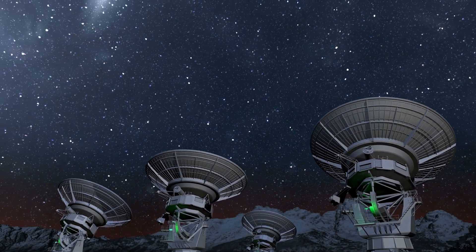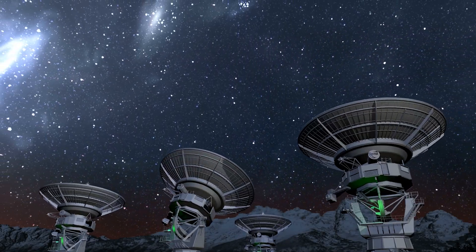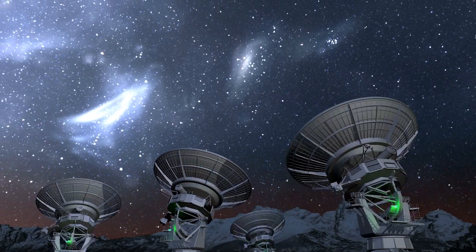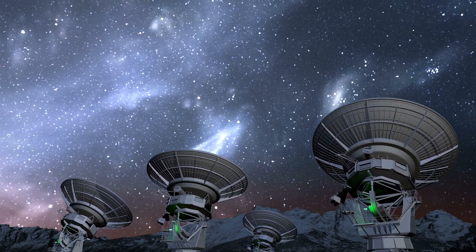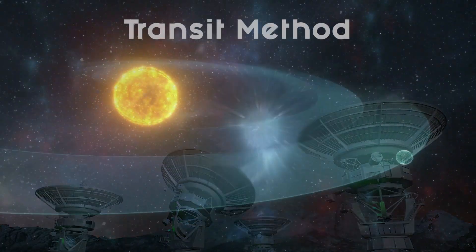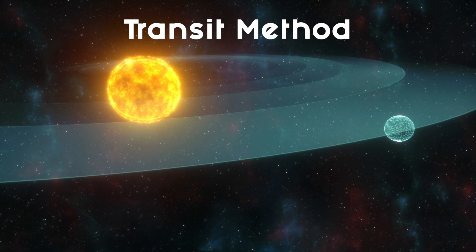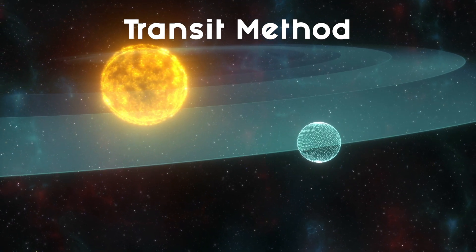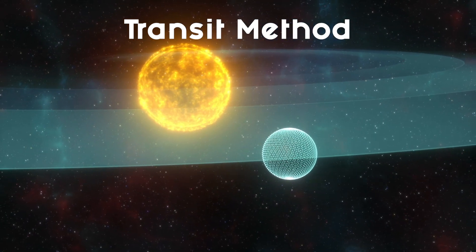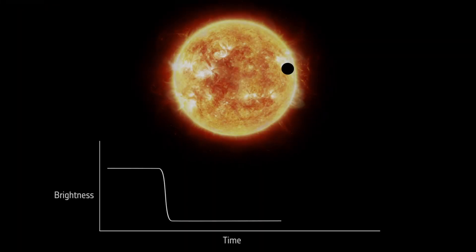But how do we detect these exoplanets? One way scientists detect these planets is known as the transit method. This method involves looking for a decrease in the brightness of a star as a planet passes in front of it. This decrease in brightness is called a transit, and it allows astronomers to determine the size and orbital period of the planet.